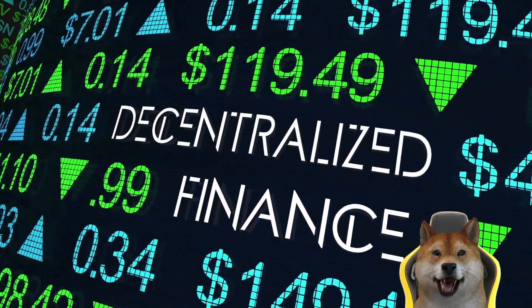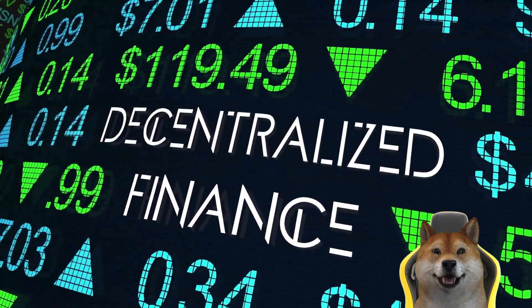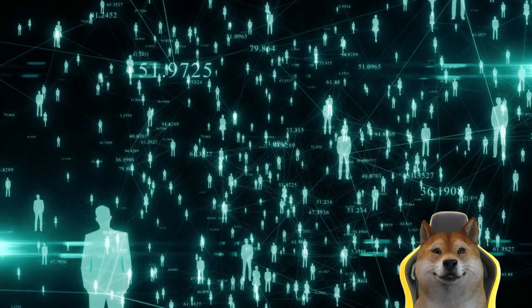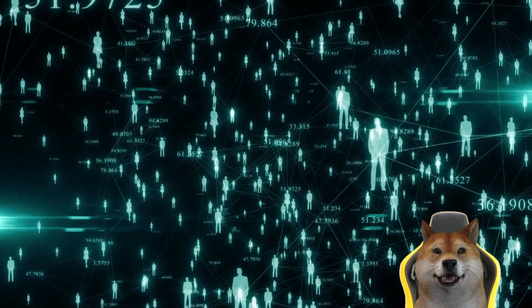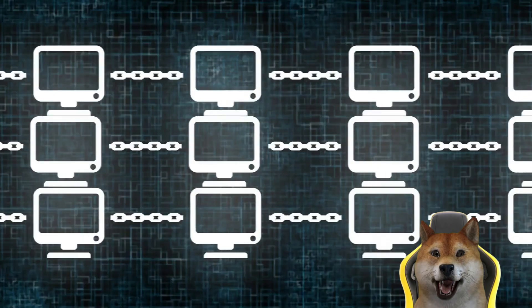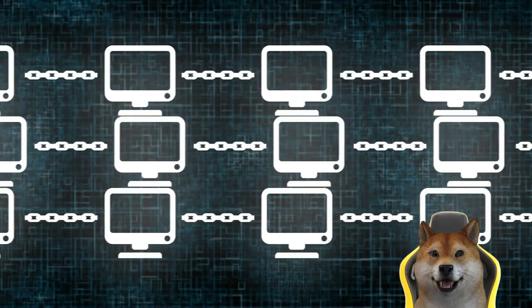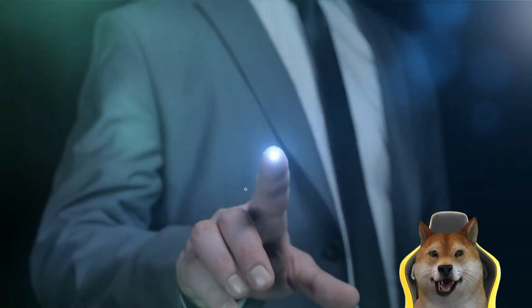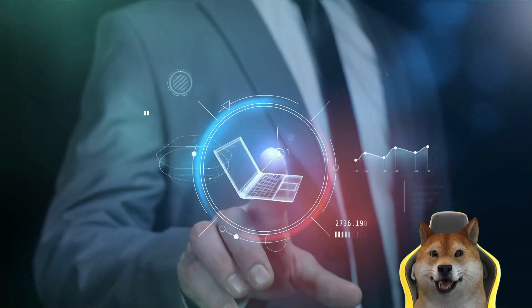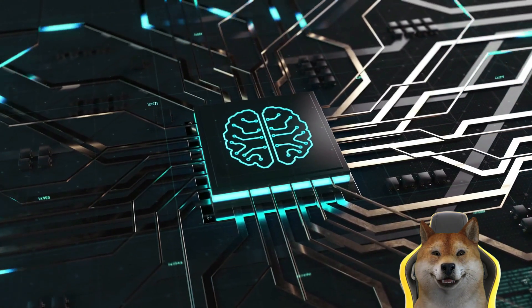Web 2 allowed content consumption and simple interaction. Then, Web 2 gradually emerged as a more interactive internet where users were more involved in generating their own content. Since these modes of online interactions were mainly facilitated by social media platforms, Web 2 saw the rise of new types of centralized tech giants.